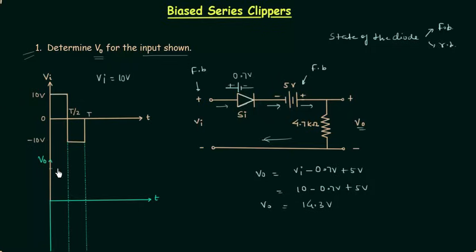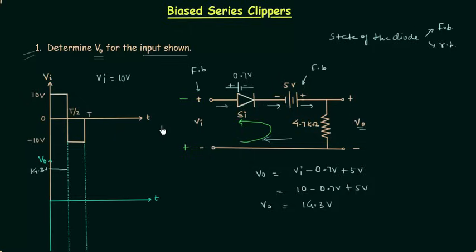I will quickly plot 14.3V as the output voltage for the first half cycle from 0 to T/2. For the next half cycle from T/2 to T, the polarity is minus-plus, so the silicon diode will be reverse biased because the direction of current is anticlockwise, opposite to the direction of the arrow. Since VI = 10V is greater than 5V, the 5V supply alone is not sufficient to forward bias the diode, so the diode is reverse biased.